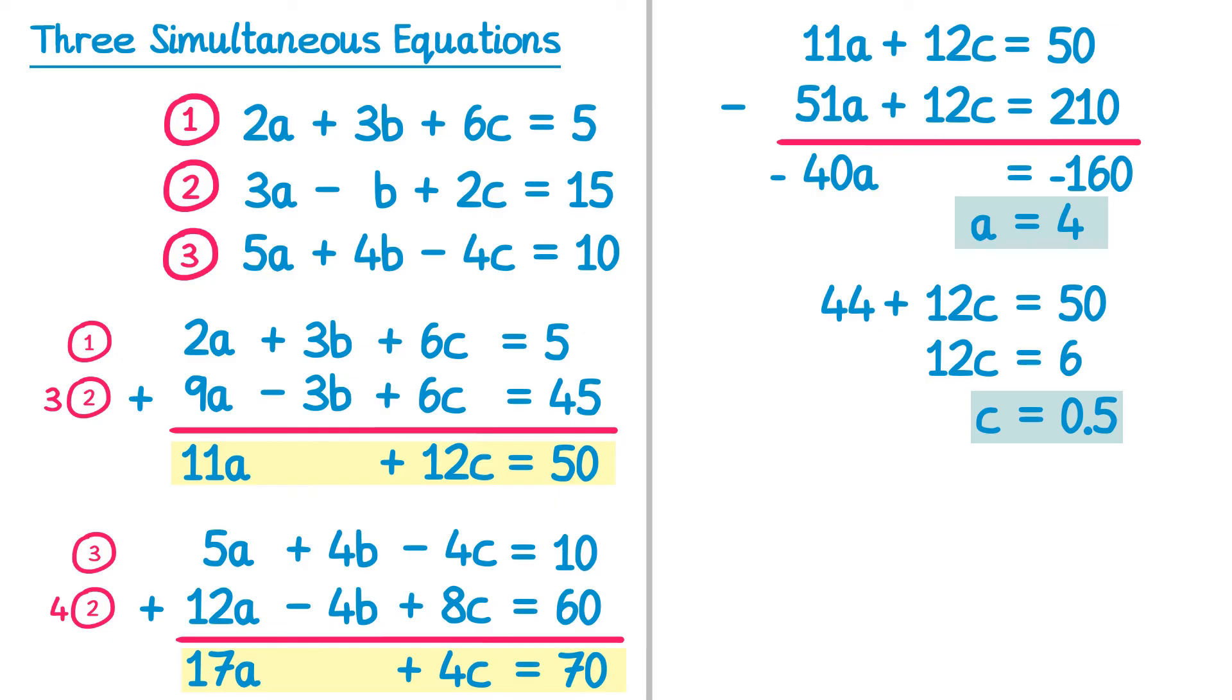We now pick one of the original three equations to substitute both of these back into to find b. I'm going to go for the first one. So 2a, but a is 4, so that's 8, plus 3b, plus 6c, but c is 1 half, so 6c is 3, equals 5. So we have 3b plus 11 equals 5. Take 11 from both sides and you'll get 3b equals negative 6, in which case b equals negative 2.